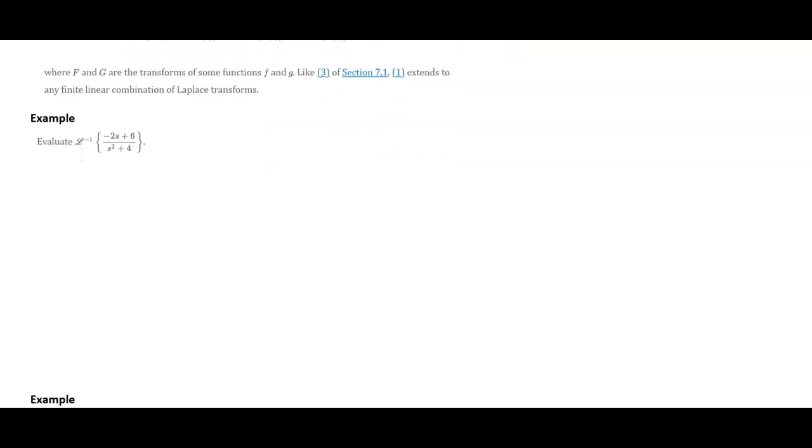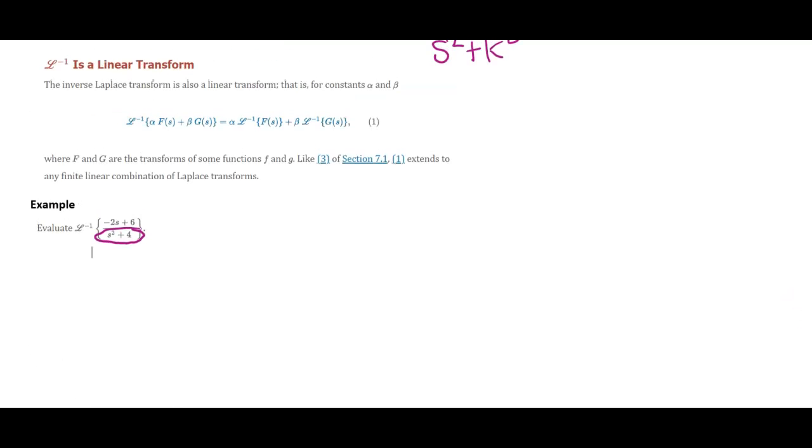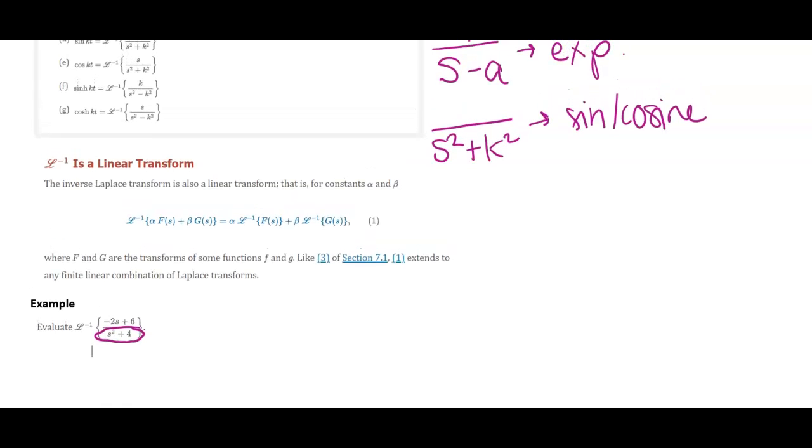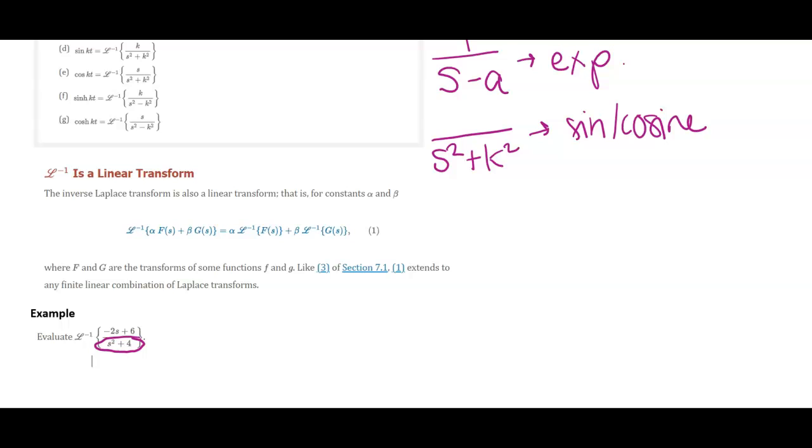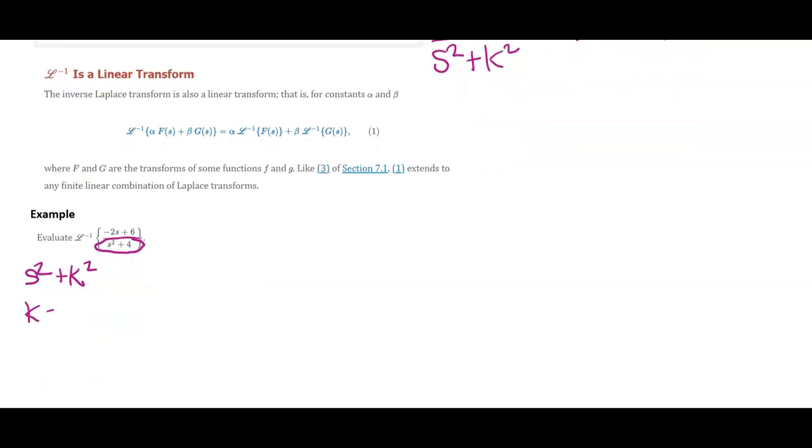So let's look at this first example. I want to find the inverse Laplace of this right here. And the first thing that I look at is the denominator. And I look back at my forms and I think about what form this looks like. And this looks like an S squared plus K squared form where K is equal to two. So what that leads me to believe is this is going to be a sine cosine answer.